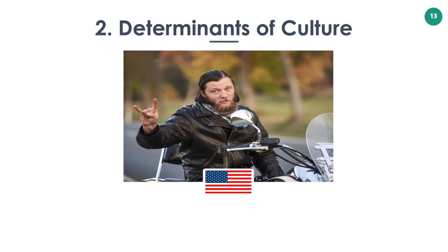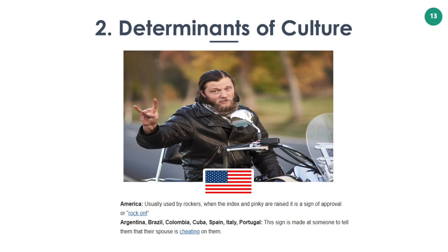Next, we have the rock sign. In the United States, it is usually used by rockers — when the index and pinky are raised, it is a sign of approval or 'rock on.' However, in other countries such as Argentina, Brazil, Colombia, Cuba, Spain, Italy, and Portugal, this sign is made to tell someone that their spouse or partner is cheating on them.